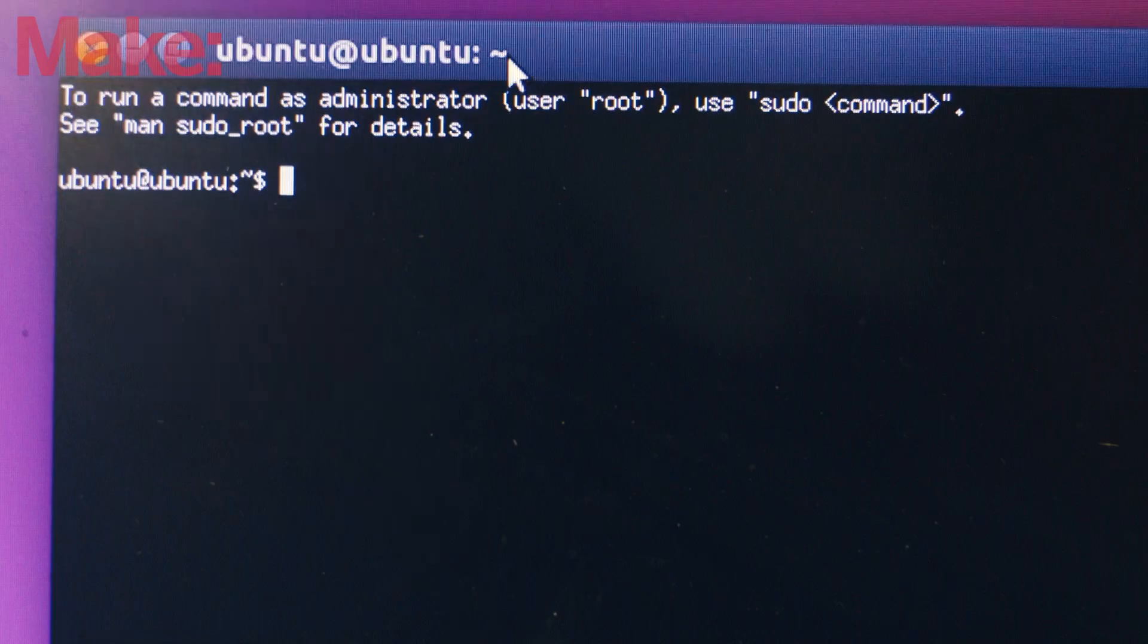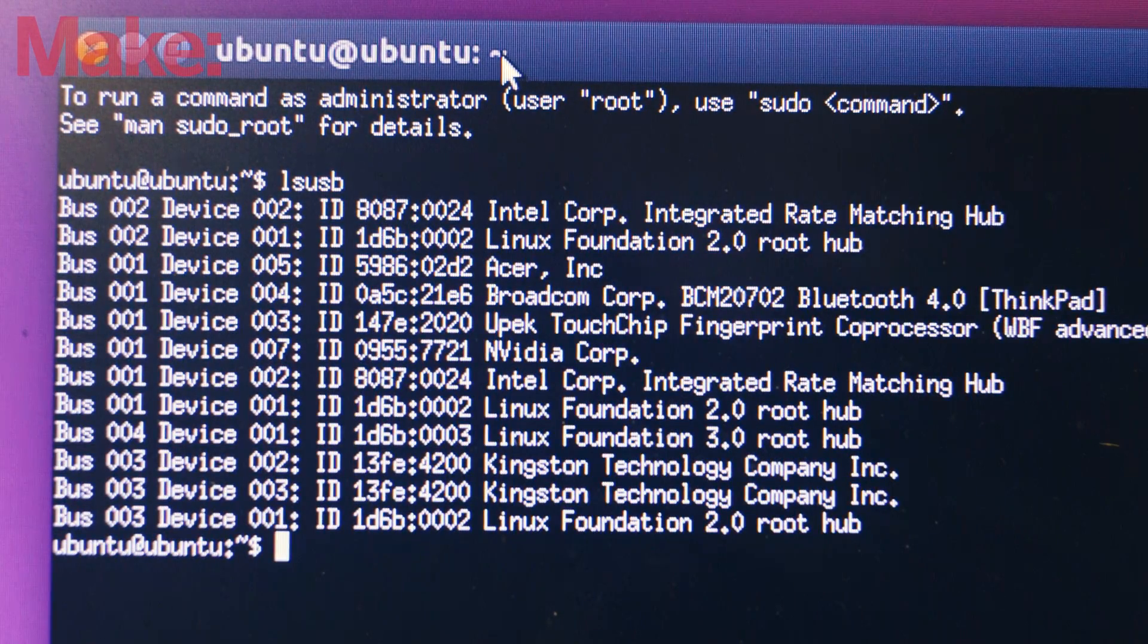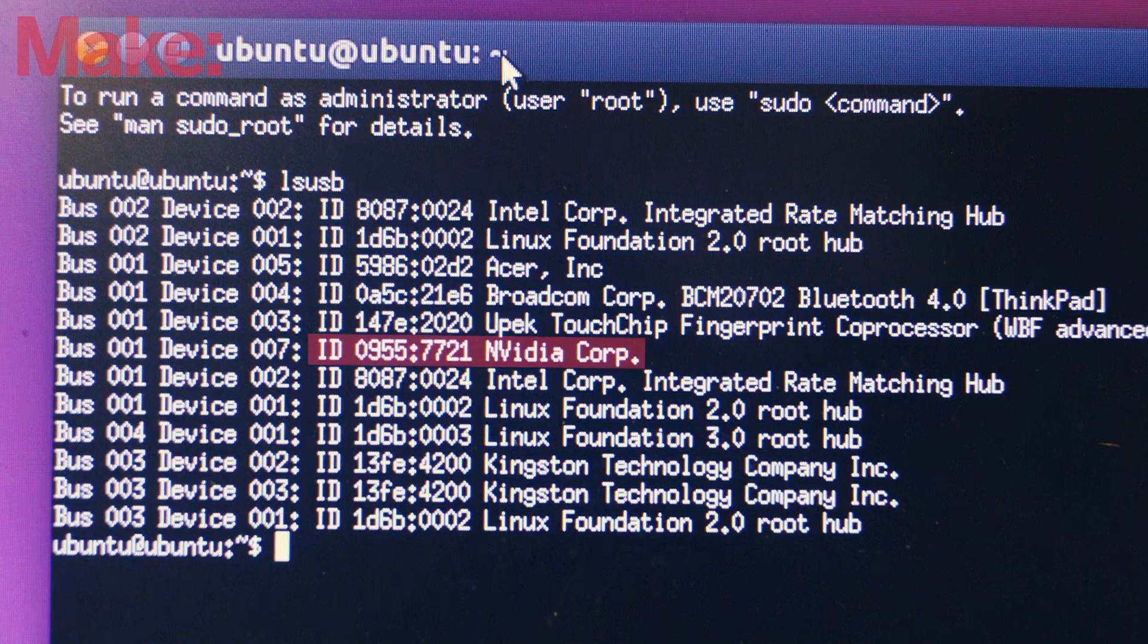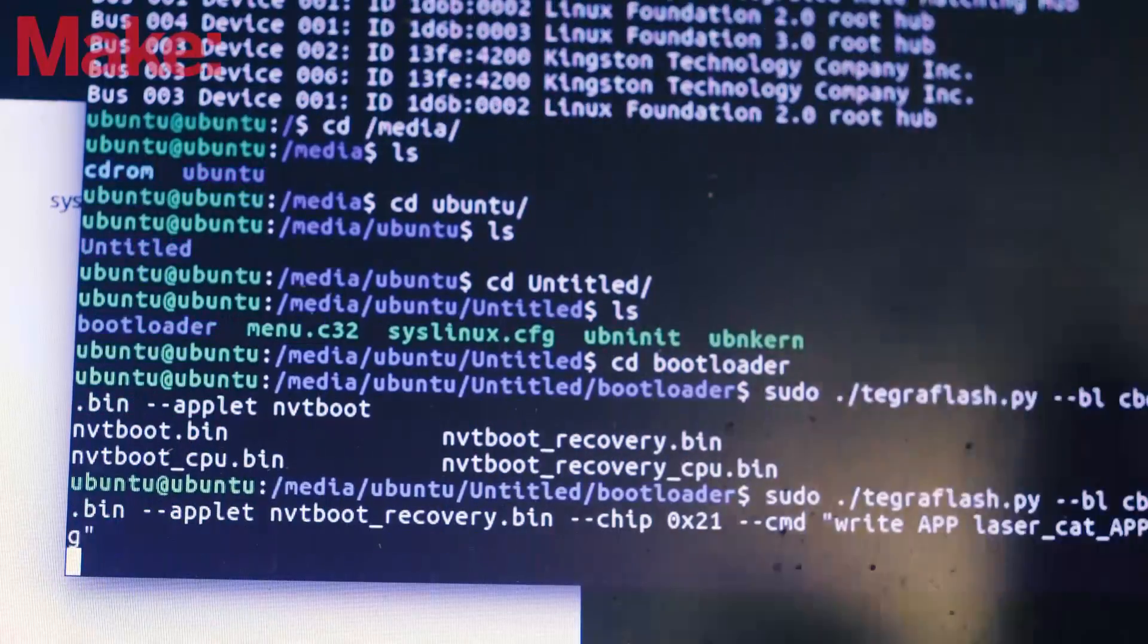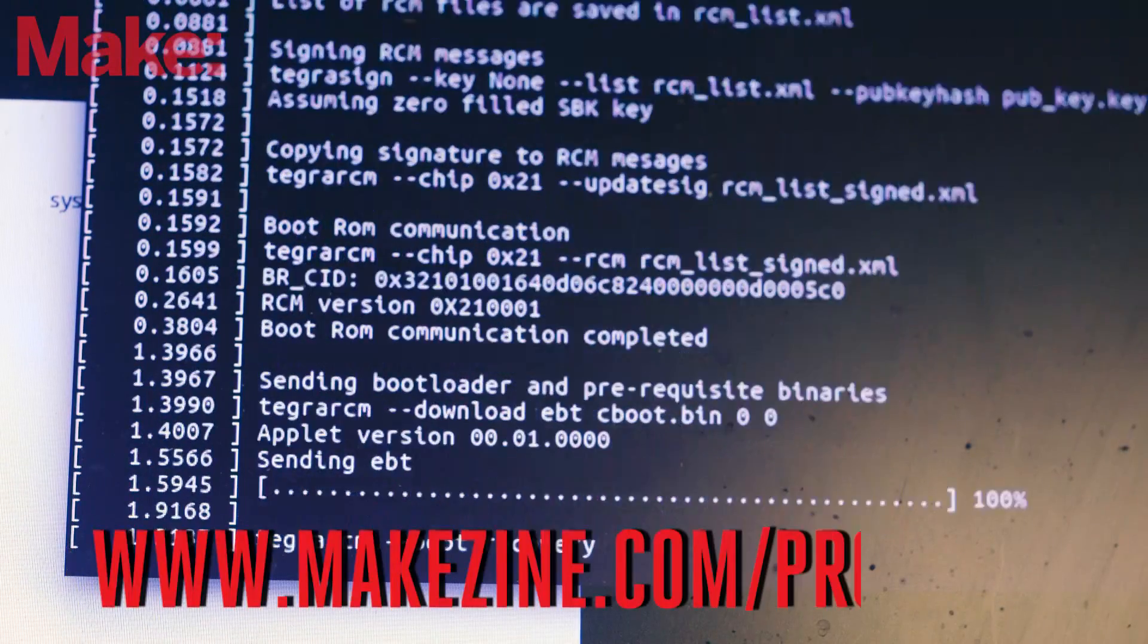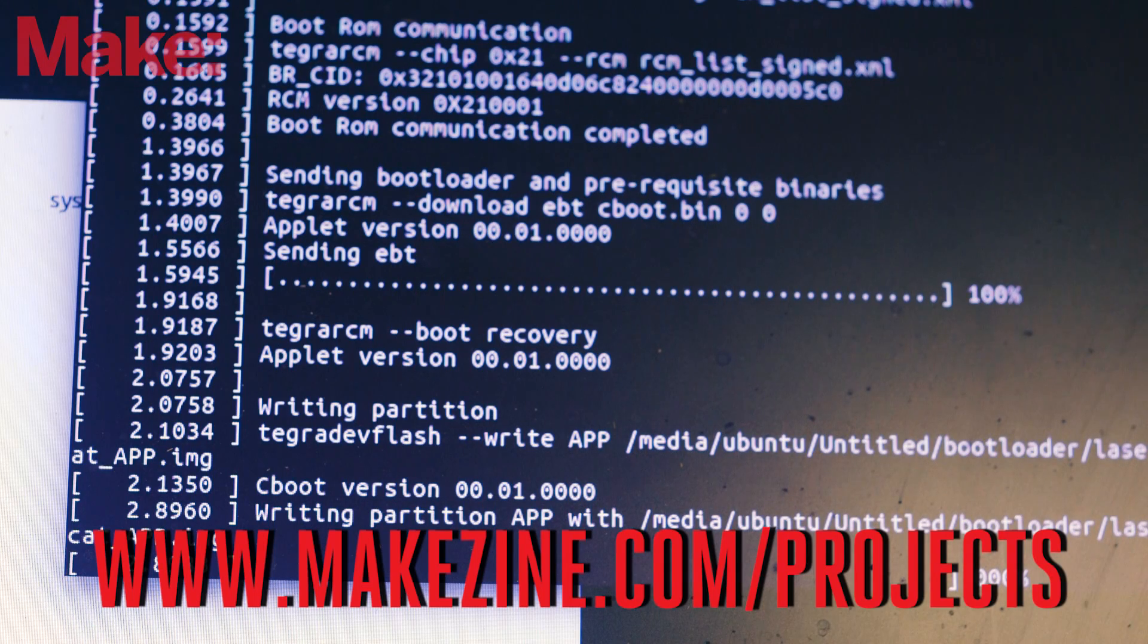Verify that the board is ready to receive the image by typing LSUSB into the terminal window on your computer. You should see an NVIDIA device, that's the Jetson. Mount the other USB drive with the device image, and then flash the TX1 board using this command. Check the link below for links to the image file and full instructions.